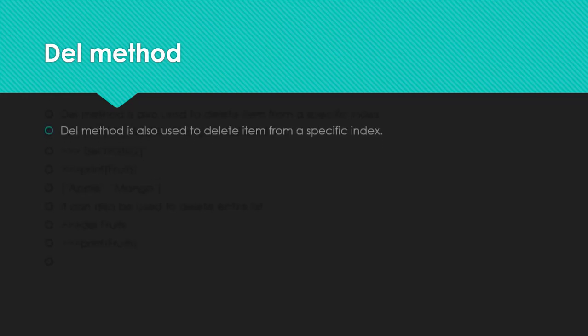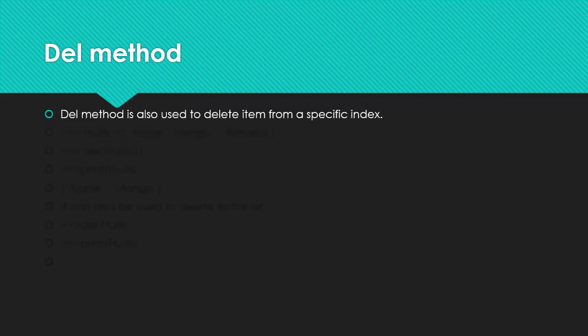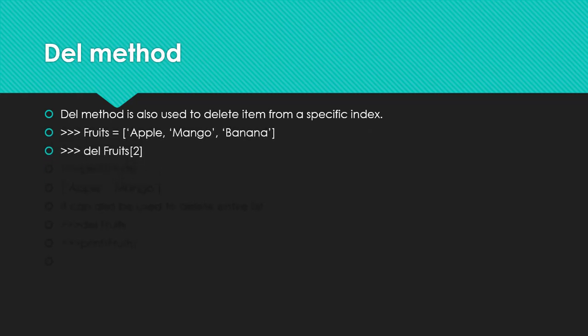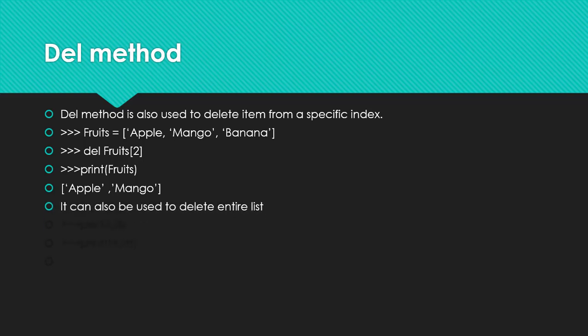The del keyword is used to delete an item from a specific index. For example, del fruits[2] deletes banana. The difference between pop and del is just the syntax — pop is a method and del is a keyword. We can also delete the entire list using del: del fruits, and then the list no longer exists.